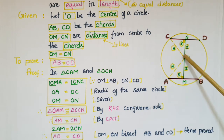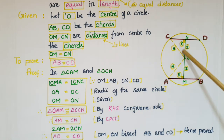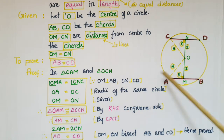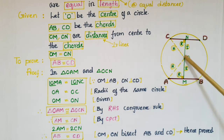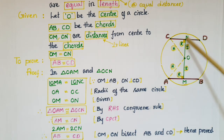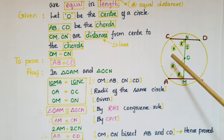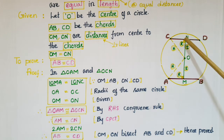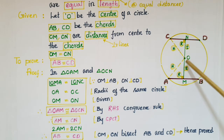OA is equal to OC because these two are radii of the same circle, so those are equal. And OM is equal to ON, which is given in the problem.